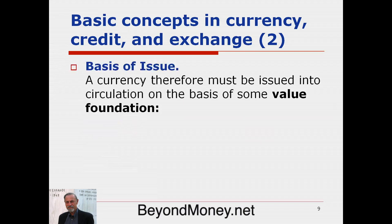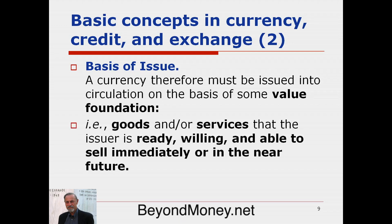The basis of issue of a currency is the goods and services that the issuer has available to sell. A currency must be issued on this value foundation — you can't just issue a currency by fiat and expect people to accept it. They have to be expecting some value to be obtained in return. It is issued on the basis of goods and services that the issuer is ready, willing, and able to sell immediately or in the near future — meaning within the next two or three months.